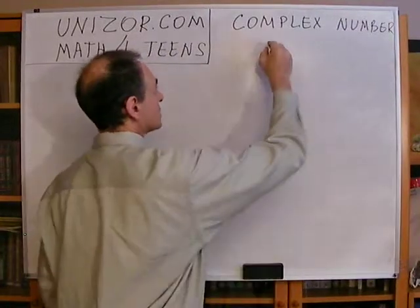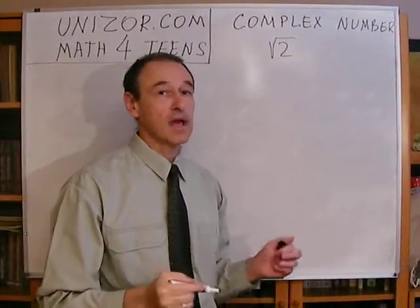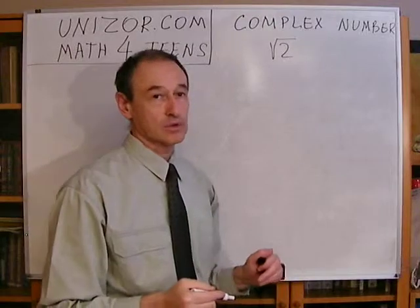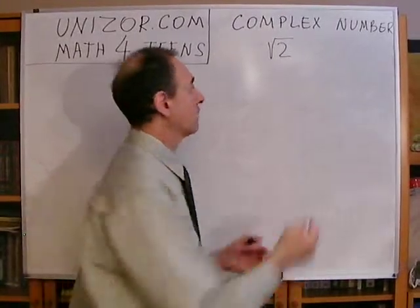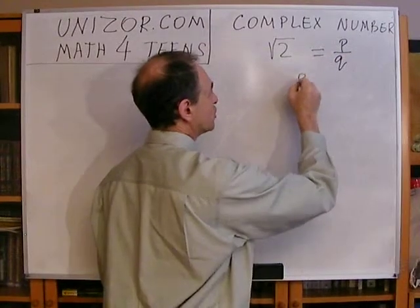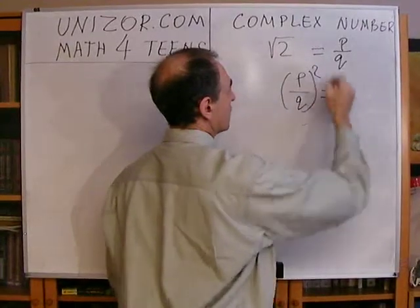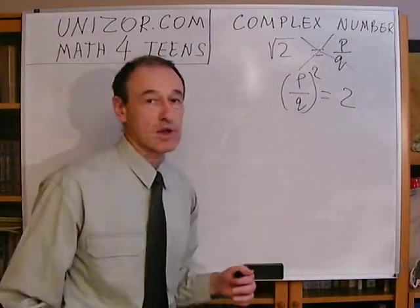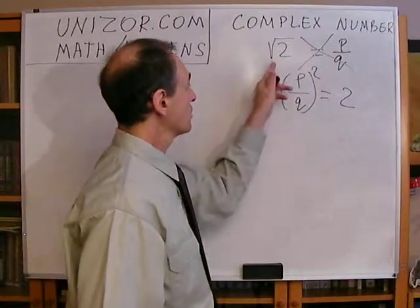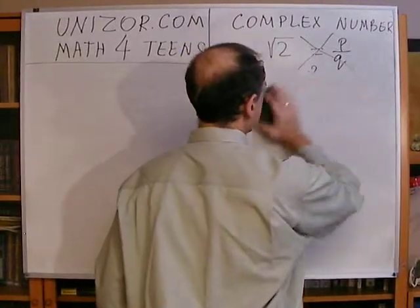The next step was, if you remember, the square root of 2. We did not have a rational number which was the square root of 2 — meaning we do not have a rational number p over q which, when squared, gives us 2. There is no such rational number p over q where p and q are integers. That's why we introduced a brand new number, square root of 2, and many others like it.